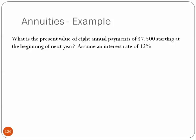Another example here: what is the present value of eight annual payments of $7,500 starting at the beginning of next year? Assume an interest rate of 12%. The key here is eight payments, $7,500 each at 12%.